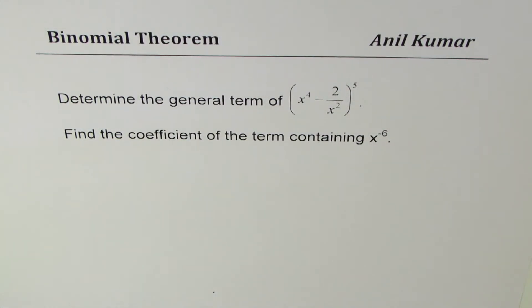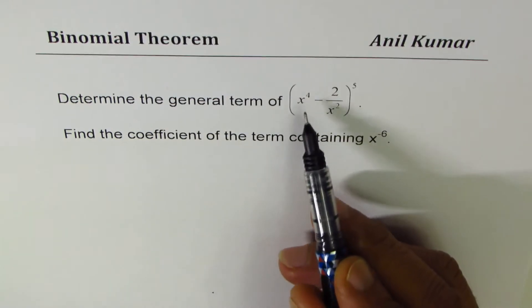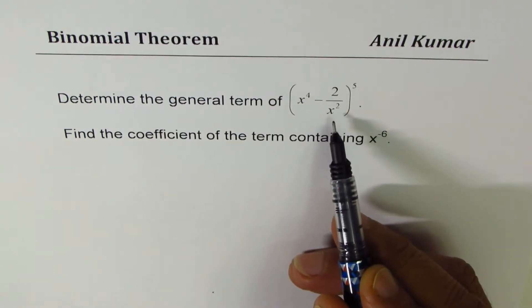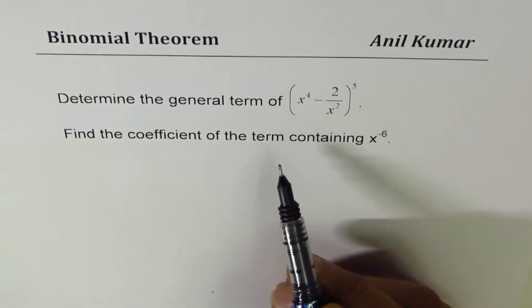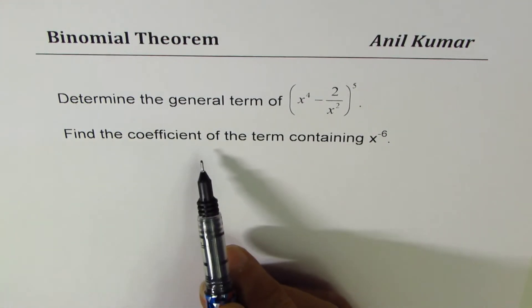I'm Anil Kumar, welcome to my series on binomial theorem. The question here is: determine the general term of (x^4 - 2/x^2)^5. Find the coefficient of the term containing x^(-6).